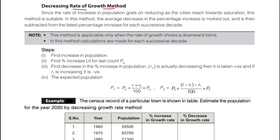In this method, the population is increasing, but the percentage of growth is decreasing. The rate of increase in population goes on reducing as cities reach towards saturation. For example, in 2010, Chennai or Mumbai might have a population of one crore, and after 20 or 30 years it may become two to three crores, after which it will maintain that level — that is the saturation point.